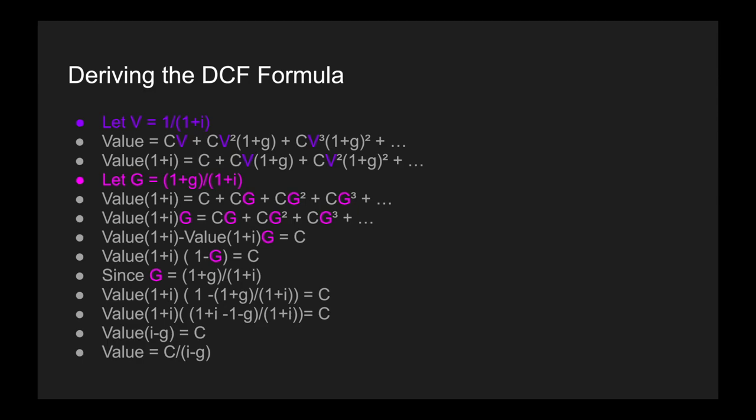The maths for you as a trader is not that important to derive on your own, but it's important to see where this formula comes from — it's not something we just made up, there is a lot of maths behind it. But what's lovely is that it reduces to this very, very simple formula. Now we're going to see how do we determine I and how do we determine G, because once we have those two parameters we can determine value — and that can assist us in deciding whether to go long or short on various assets.